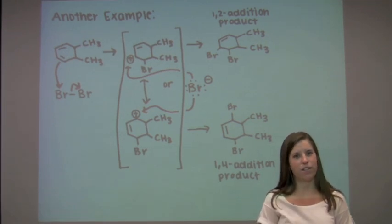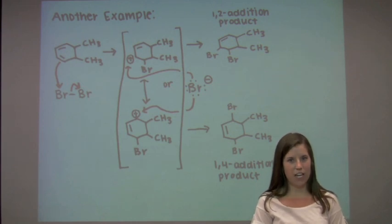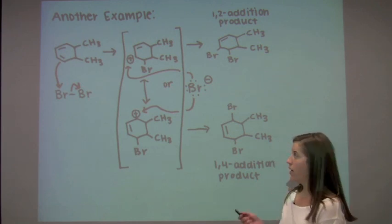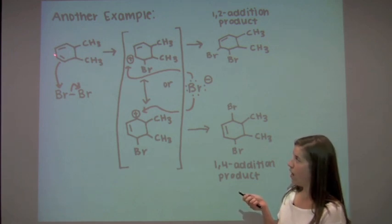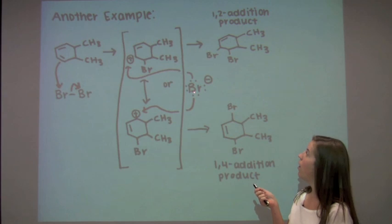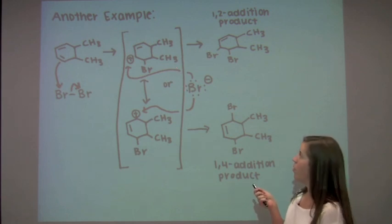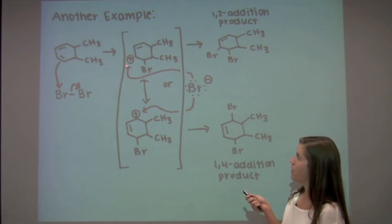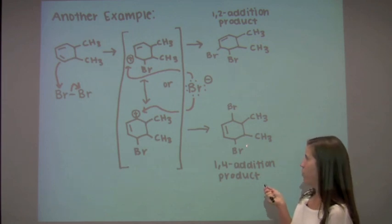Let's look at an example that illustrates that this reaction is not just limited to the addition of hydrogen halides across a conjugated diene. Here, a bromine molecule will be added across a conjugated diene. If the pi electrons attack a bromine atom in the bromine molecule, it will result in the allylic carbocation common intermediate. Depending on whether the bromine anion attacks the second or fourth carbon determines whether the 1,2 or the 1,4 addition product is formed.